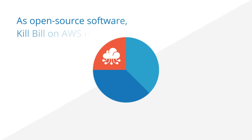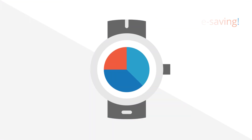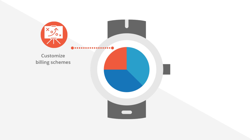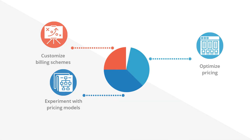As open-source software, Kill Bill on AWS is a much more cost-effective way for you to create a custom solution for subscription billing and payments. It's also time-saving. You can dedicate your time and energy toward customizing your billing schemes, optimizing your pricing, and experimenting with different pricing models.